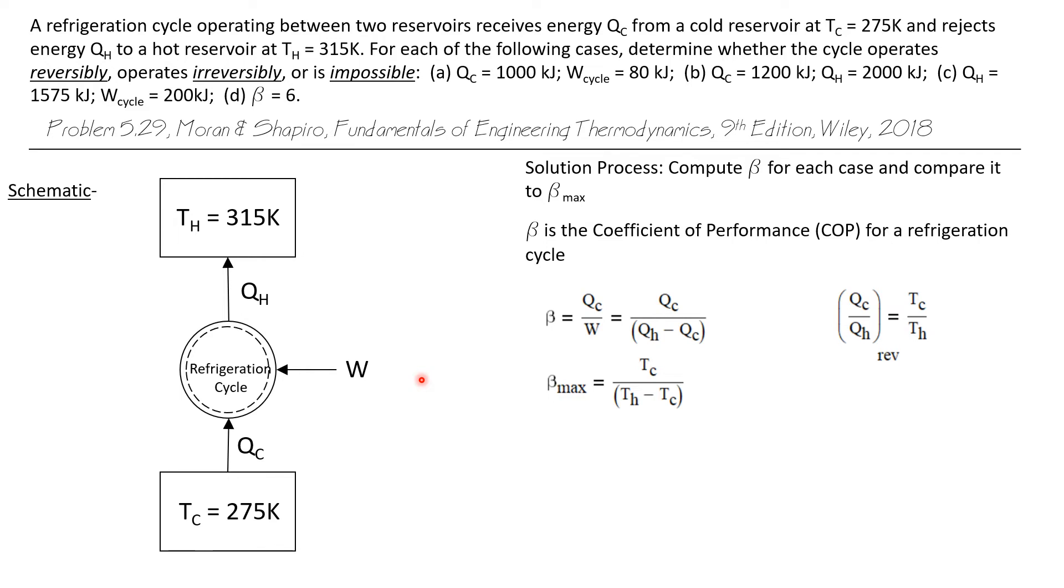for refrigeration cycles, we designate the coefficient of performance as beta. To evaluate these claims, we'll compute beta for each case and then compare that to beta max. What is beta? As with the power cycle, the performance beta is QC over W. It's what we want divided by what it costs us to get it.